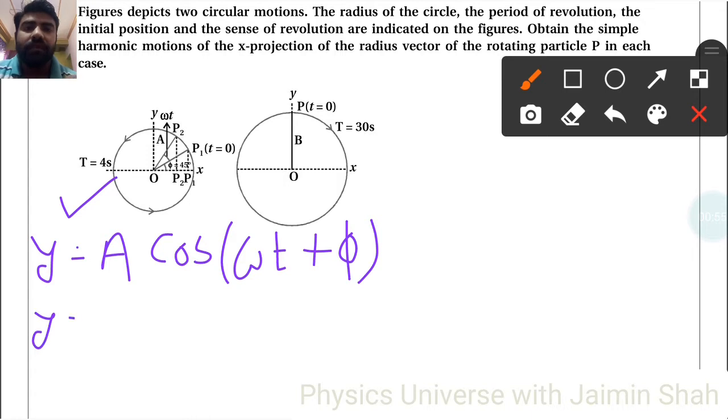Now see, Y is equal to A as it is. Now cos omega, omega is nothing but 2π upon T into T plus here, see 45 degrees. 45 degrees means π by 4 here.